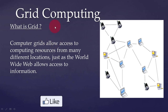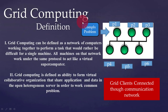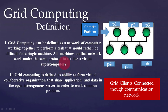Now we will see what is meant by grid computing. Grid computing can be defined as a network of computers working together to perform a task that would rather be difficult for a single machine. All machines on the network work under the same protocol to act like a virtual supercomputer. Computing means to compute or solve any complex problem. As previously discussed, a single computer cannot solve a complex problem, so solving that complex problem requires a supercomputer.